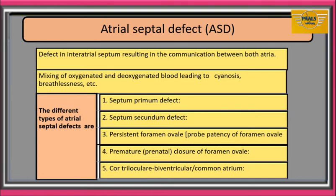We have different types of atrial septal defects: septum primum defect, septum secundum defect, persistent foramen ovale also called probe patency of foramen ovale, premature closure of foramen ovale, and cor triloculare biventriculare, which is simply called common atrium.